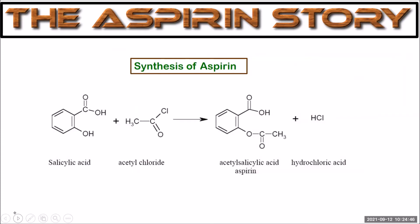The synthesis of aspirin relies on the starting material salicylic acid, produced using the Kolbe synthesis, and acetyl chloride. Acetyl chloride is an acid chloride, and these are often more useful in synthesis than carboxylic acids. The acid chloride reacts with the hydroxyl group attached to the benzene ring — known as a phenol — producing acetyl salicylic acid, which we know as aspirin, with hydrochloric acid eliminated. A small molecule is eliminated in this condensation reaction, forming an ester group on the molecule.